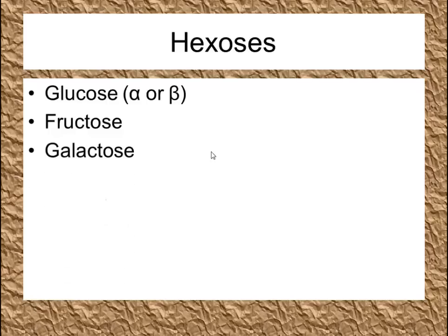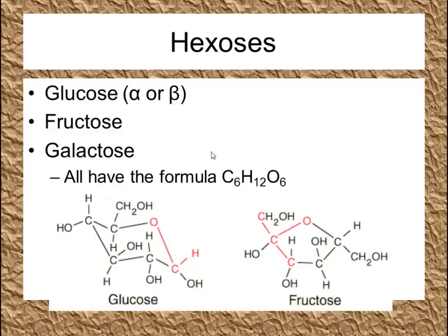Fructose is also a hexose, as is galactose. All of them have the formula C6H12O6. Fructose's ring only has five sides, but there are additional carbons outside the ring, making it a six carbon sugar. The glucose shown here is also alpha glucose, but represented in its three-dimensional form more accurately — it's not flat like a benzene ring, it's more of a jagged shape. Labelling the carbons one through six on alpha glucose, the OH points down on carbon one and down on carbon four, confirming it is alpha glucose.